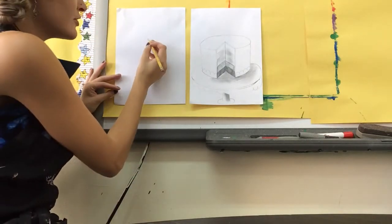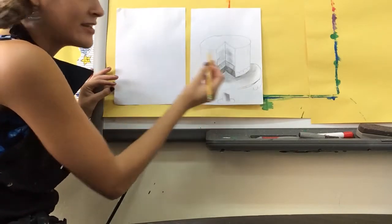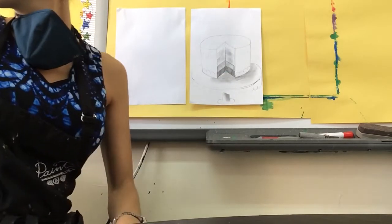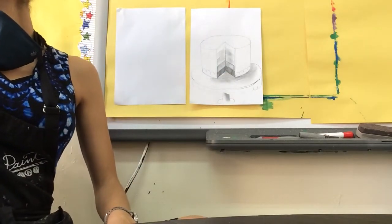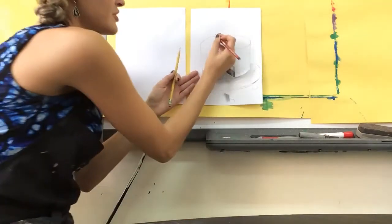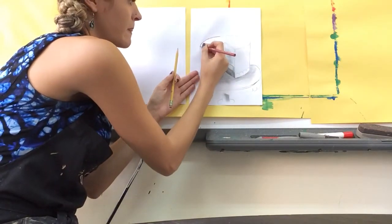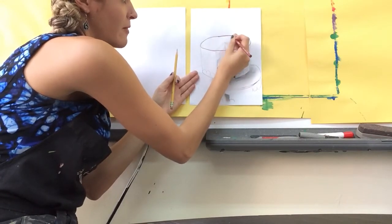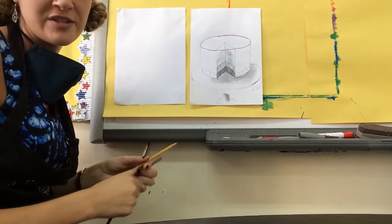The first thing you do is you're going to make an ellipse. The ellipse is, I'm going to grab a colored pencil, this shape right here. That's the first shape we're going to make.